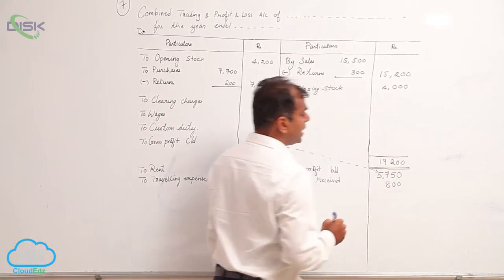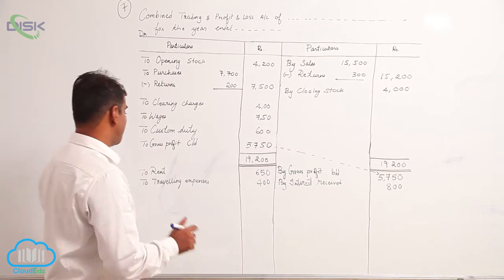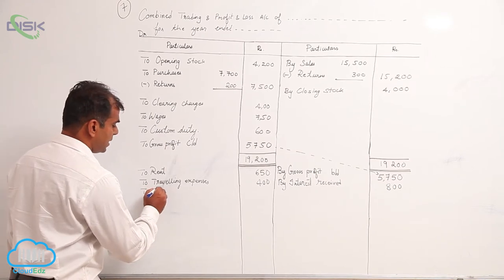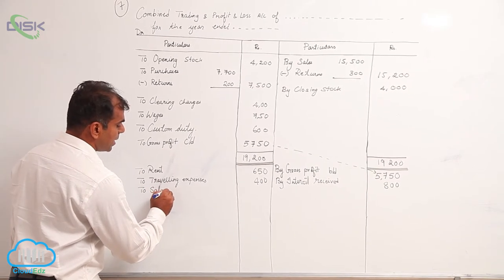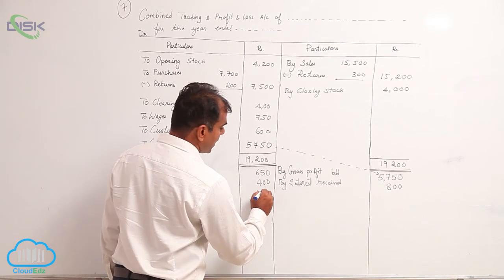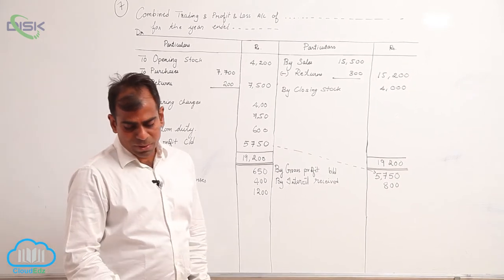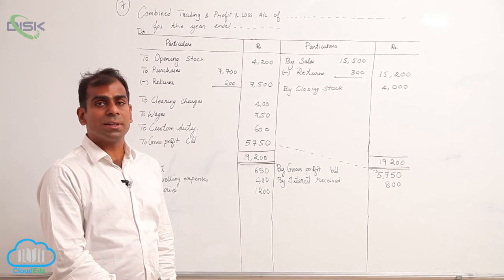Now next item being salaries, again indirect expense, so on the debit side, salaries. The amount being 1,200. So salaries on the debit side, the amount being 1,200.